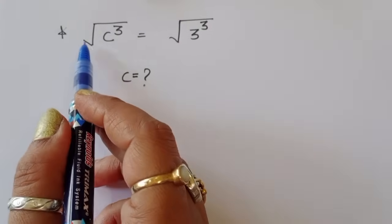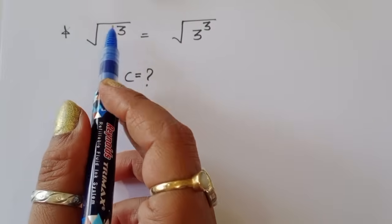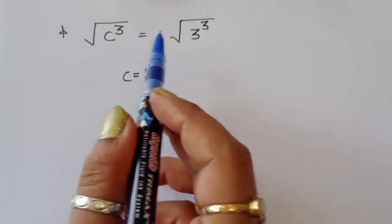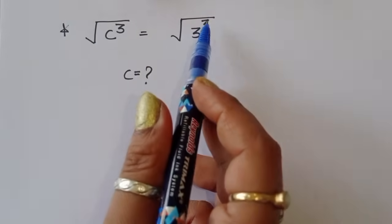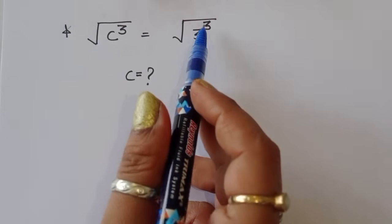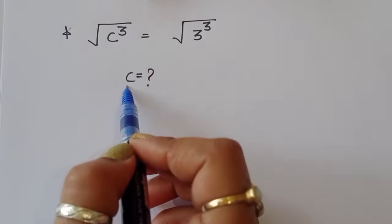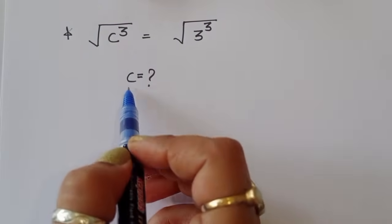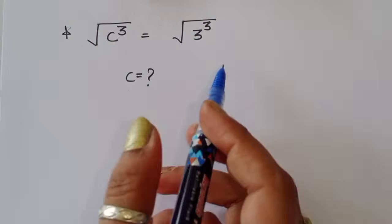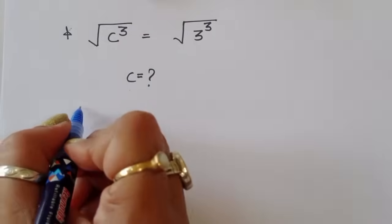The question is: given square root of c cubed is equal to square root of 3 cubed, we have to find out the value of c. Let's see the solution.